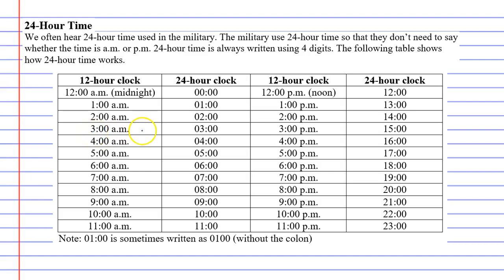If we look at this table here you can sort of see how it works. On the left side you've basically got all your a.m. times — 1 a.m., 2 a.m., all the way to 11 a.m. You'll notice that the a.m. times look exactly the same as the 24-hour times: 1 a.m. is 0100 hours, 5 a.m. is 0500 hours, and so on.